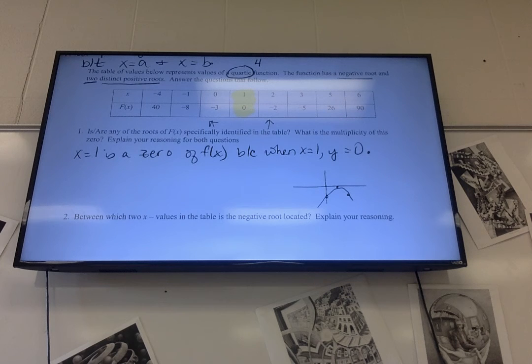And we can tell that simply because it's changing signs twice. It goes from negative to zero, and then from zero back to negative. So once it hits zero, it goes back down in the other direction again. That tells us it has a multiplicity of two.